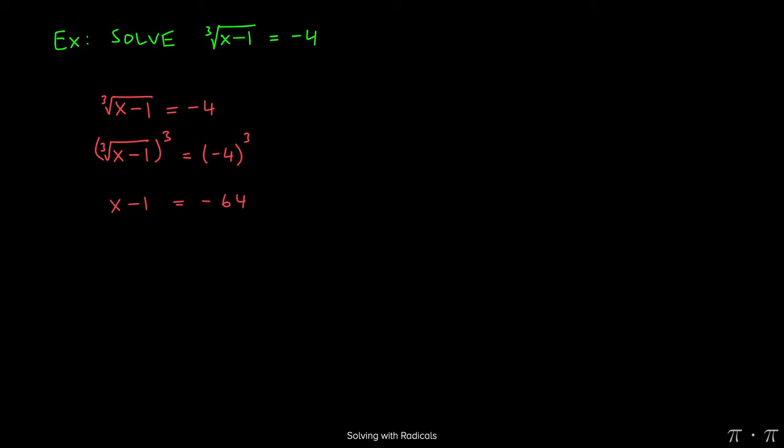Doing so, we get just x minus 1 on the left-hand side, whereas on the right-hand side, negative 4 to the third gives us negative 64.